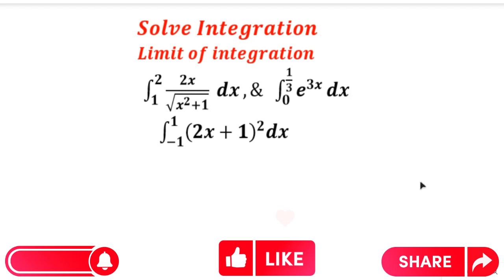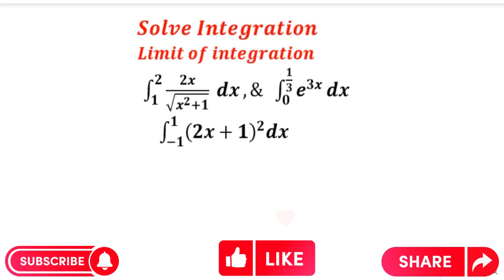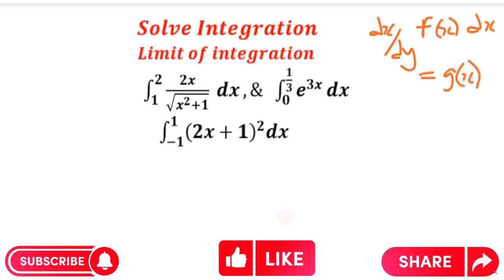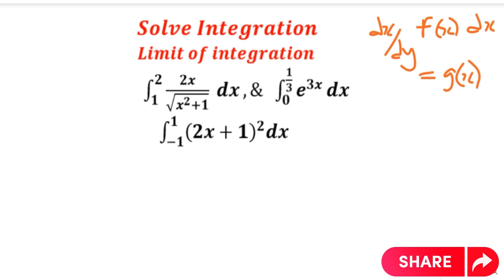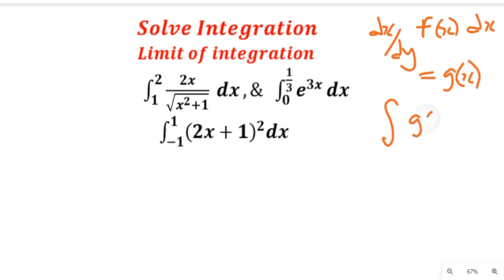Also remember to hit the bell icon so that you'll be notified whenever I upload my daily mathematics content. Thank you. Now, to solve this question, I want you to recall some rules that go with integration. Remember, integration is the opposite of differentiation. So when we differentiate a function with respect to x, our result can be g(x). If we then integrate that result g(x) at given limits, say 0 to 1, with respect to x, we arrive back at the original function plus a constant.